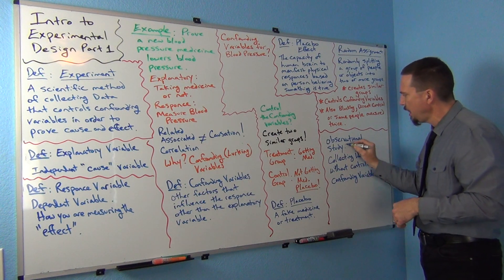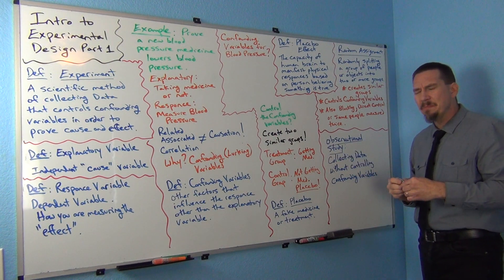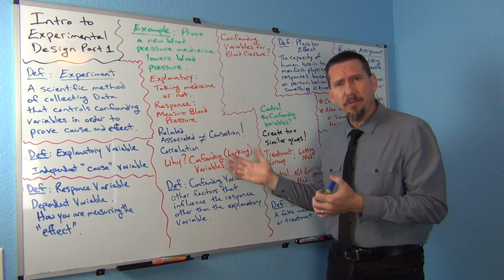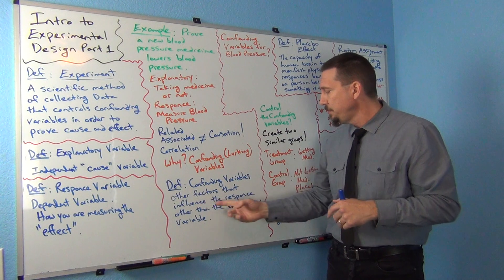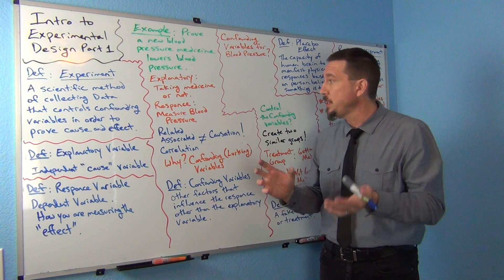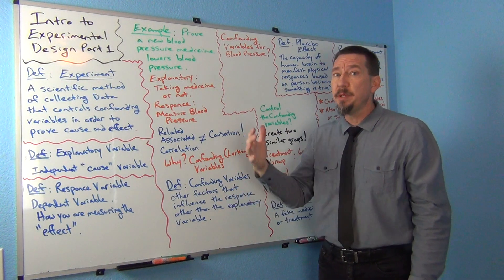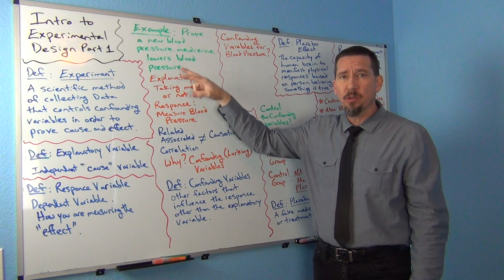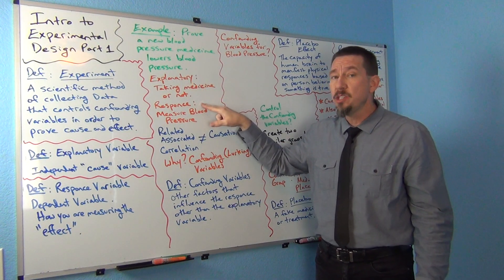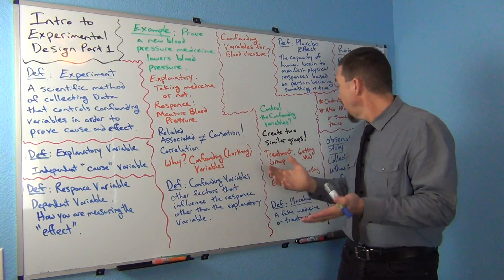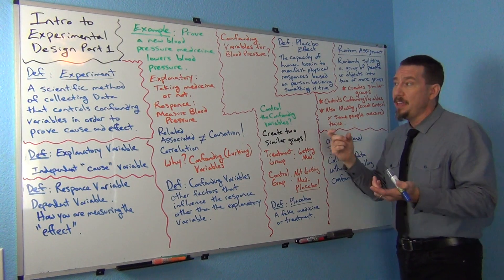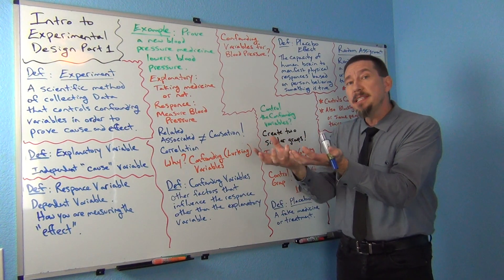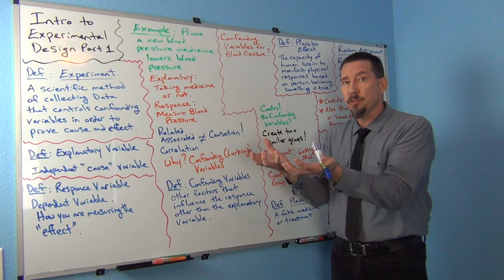Experiments are really tied to confounding variables. Confounding variables — also referred to as lurking variables — are other factors that influence the response other than the explanatory variable. Is there some other reason somebody's blood pressure could fluctuate up or down besides the medicine? This is why you can't claim cause and effect just because two things are related.